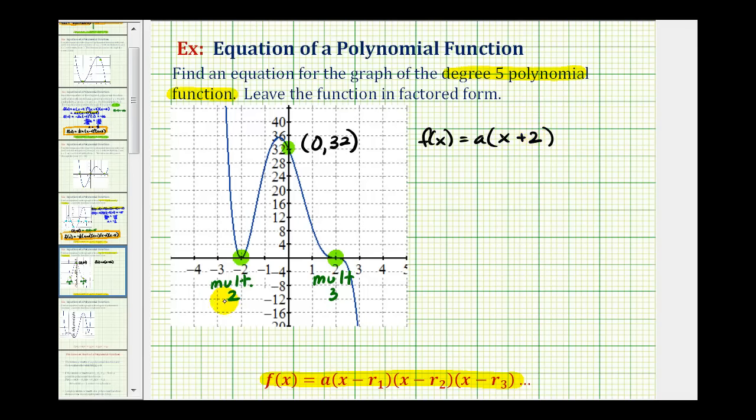But because it has multiplicity two, meaning this is a double zero, we'd actually have two factors of x plus two or the quantity x plus two squared.